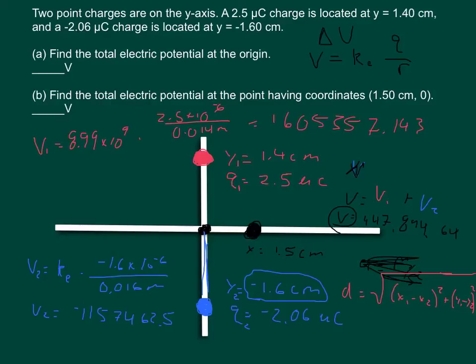And what that means is if we break down all of our coordinates to x and y components. So for example, my q1 is going to have a coordinate of zero comma 0.014. And my point q2 is going to have coordinates of zero comma negative 0.016.